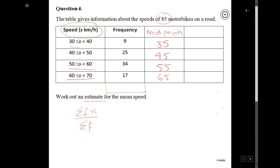So if I was to add the 9, the 25, the 34 and the 17, that should give me 85. And that's going to be my sigma f, the total of my frequencies.